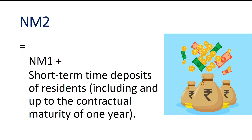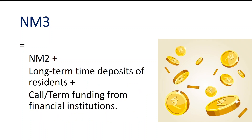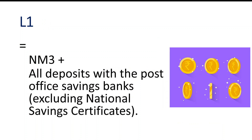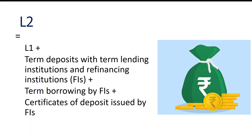New M3 (NM3) includes NM2 plus long-term time deposits of residents plus call or term funding from financial institutions. Then we have L1, which equals NM3 plus all deposits with the post office saving banks excluding national savings certificates.